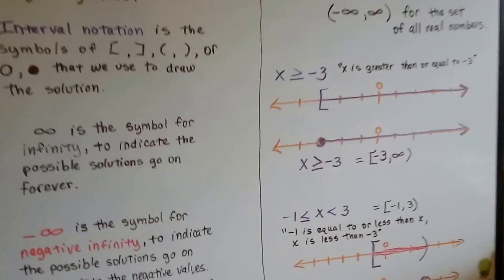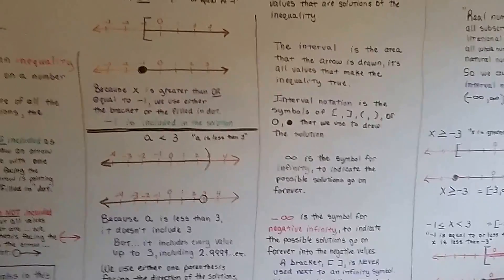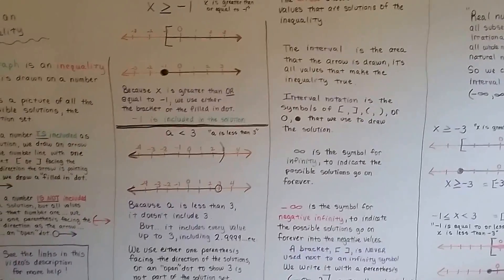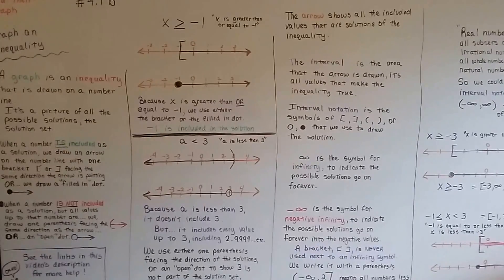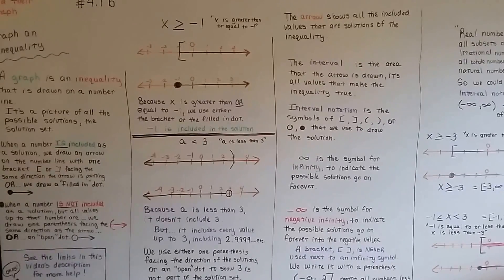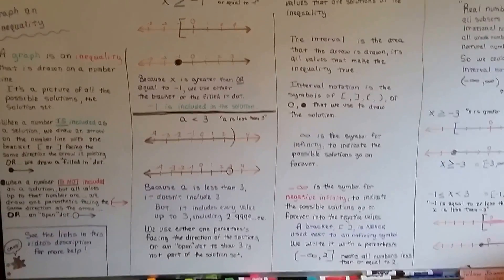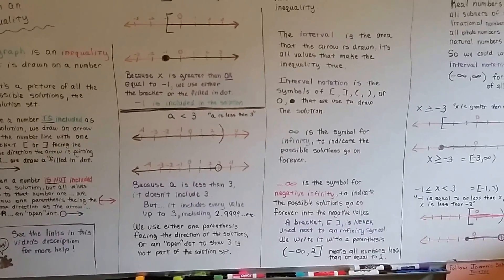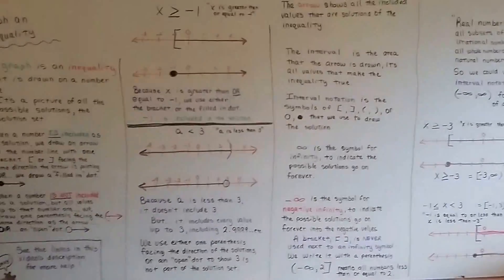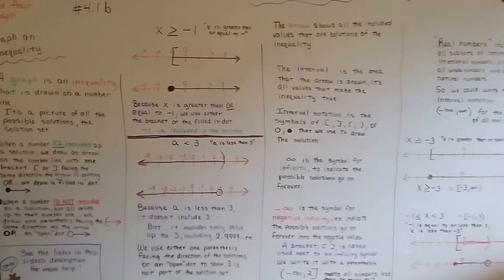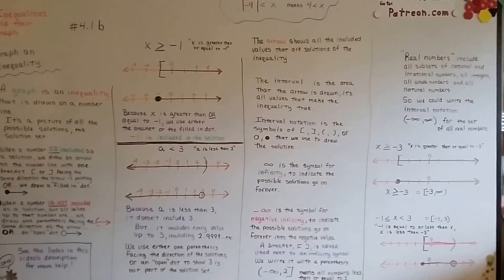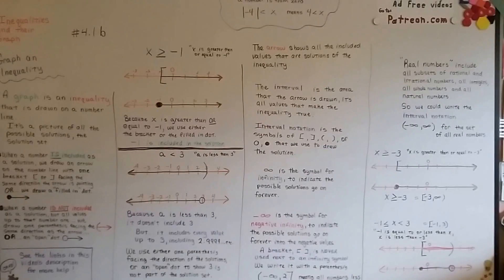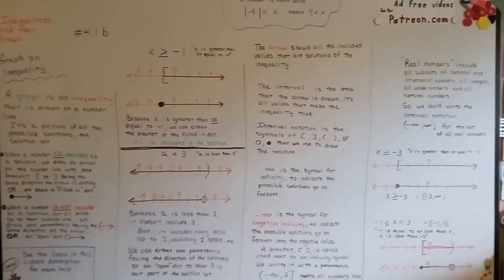That is graphing an inequality — it just means putting it on a number line, and it's referred to as a graph. Now you understand intervals, interval notation, the infinity sign, negative infinity, and why I prefer the bracket and the parentheses. You're going to get into this a lot more in Algebra 2. Some of this might be a little more than you need, but aren't you glad you know more than everybody else?